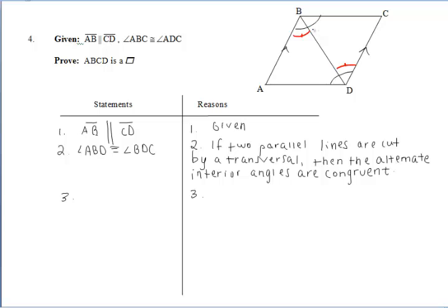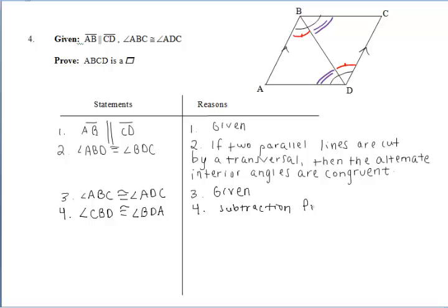Now, since we were given that those large angles ABC and ADC are congruent, and we now know that those red smaller angles are congruent, we can use the subtraction property to say that those purple angles, angle CBD and angle BDA, are congruent by the subtraction property.